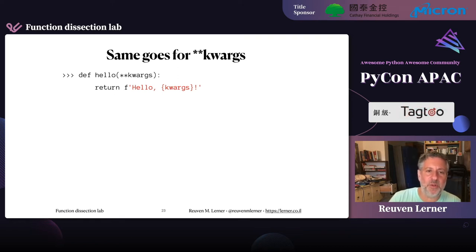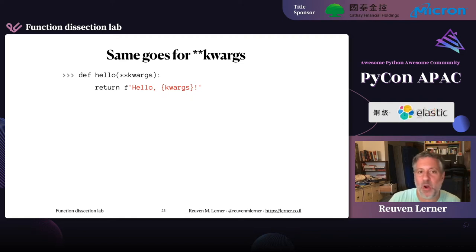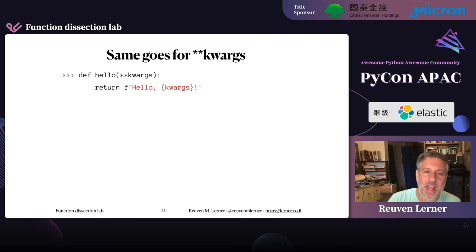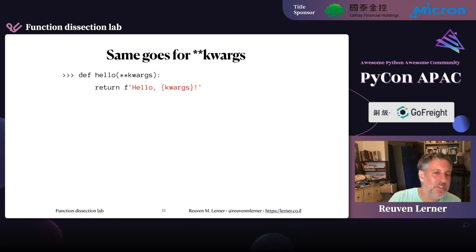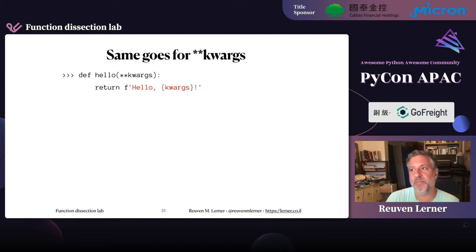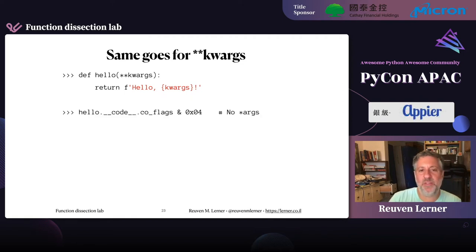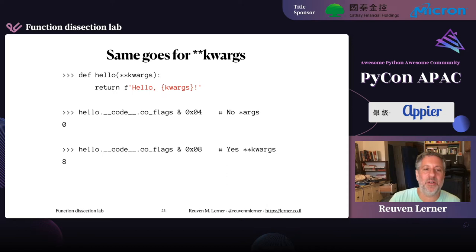What about double splat **kwargs? If I say def hello(**kwargs), any and all keyword arguments are put into a dictionary called kwargs. Positional arguments are not legal in this function. If I check hello.__code__.co_flags & 0x04, no *args. But co_flags & 0x08? Yes — kwargs is there. There is a really cool module in the standard library called dis, short for disassembly. In the dis module, we have the show_code function, which gives a nice summary of what's going on in the function.